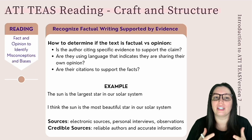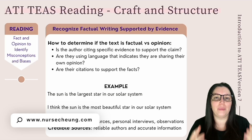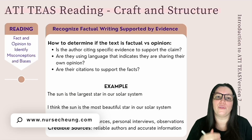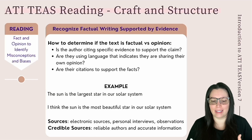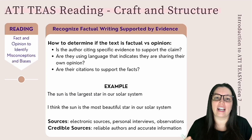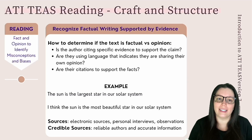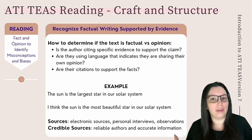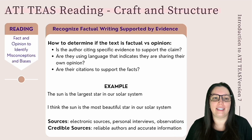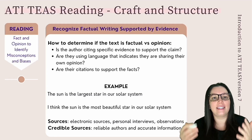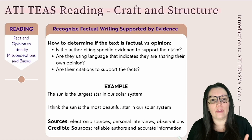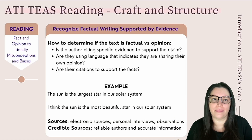To begin, we're going to take a closer look at distinguishing between fact and opinion to identify misconceptions and biases. The first subtopic is recognizing factual writing supported by evidence. When information is presented as factual, the reader must be able to trust that the information is accurate and trustworthy. To determine whether a statement is a fact or opinion, we have to look for cues within the text — is the author citing specific evidence, or using language that indicates they are sharing their own opinion?